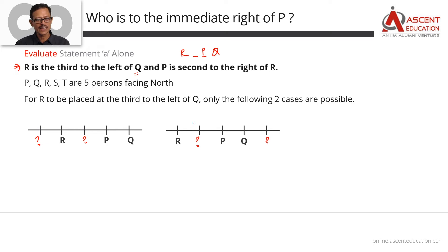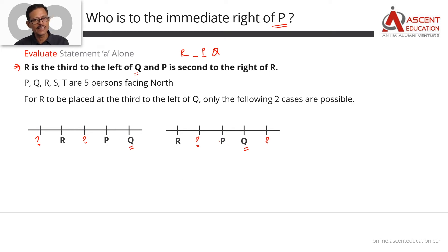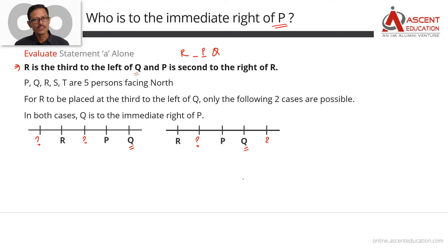However, the question only asks who is to the immediate right of P. In both possible arrangements, the person sitting immediately to the right of P is Q. So even though we don't know the exact full arrangement, we can conclusively say that Q is to the immediate right of P. We have a definitive answer.